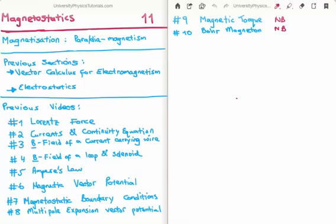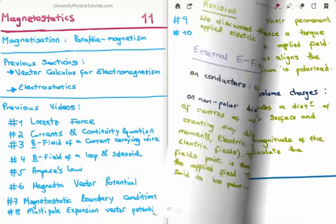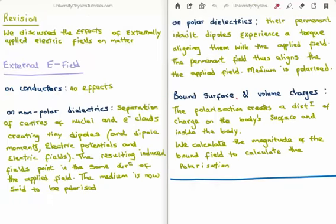We've discussed electric polarization in my series on electrostatics, which I think is the prerequisite for magnetostatics. For that reason I'm going to do a small bit of revision on electric polarization. You can see my videos on electrostatics if you don't understand that. Let's revise what happens to a piece of matter when we have an externally applied electric field. We can break down matter into either conducting material which we call conductors or non-conducting material which we call dielectrics.